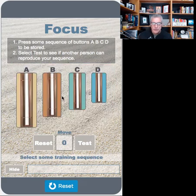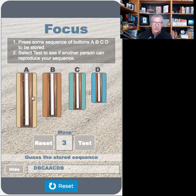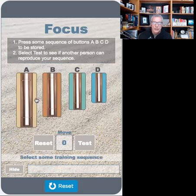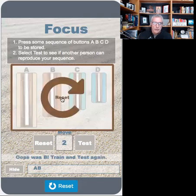If, however, they are not able to replicate the pattern, we get a different message at the end. Let's train with a different pattern. And now we go to test — the second person would try and replicate that pattern. Oops, I got it right again. Let's try it one more time, and then try and replicate that pattern. So in this case, the message indicates I did not get it correct.